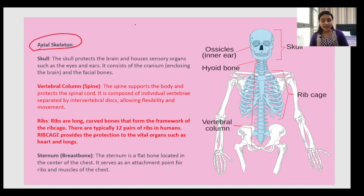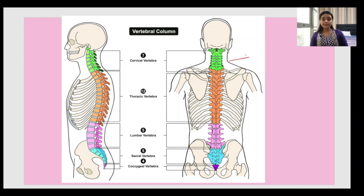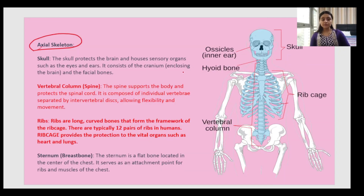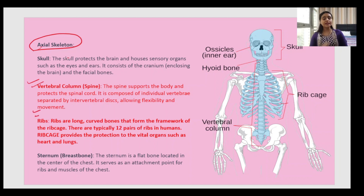First, the skeleton is divided into the axial skeleton, which comprises the skull, the vertebral column, the ribs, and the sternum. You can see the vertebral column — that is your backbone at the back. The ribs are present in the front where your lungs are. In NCRT, you need to learn about the vertebral column and the ribs; the skull and sternum are extra information. These four structures make up the axial skeleton.